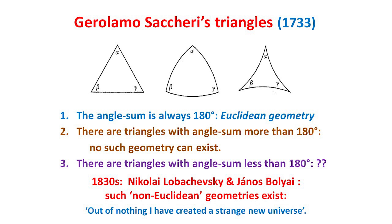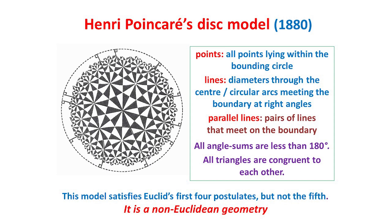These were Nikolai Lobachevsky of Russia and Yanosh Bolyai of Hungary, who claimed that out of nothing, he had created a strange new universe. What do such geometries look like? They certainly have very strange properties and are difficult to visualize. But in 1880, the French mathematician Henri Poincaré produced his so-called disk model. Here it is, and if it looks slightly familiar, it's because the Dutch artist Maurice Escher based several of his famous circular woodcuts on it.